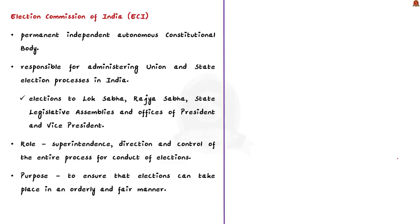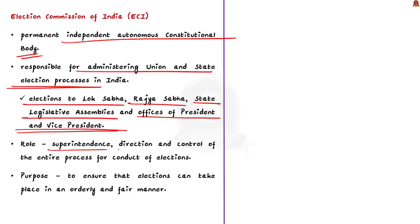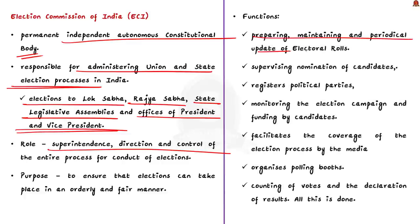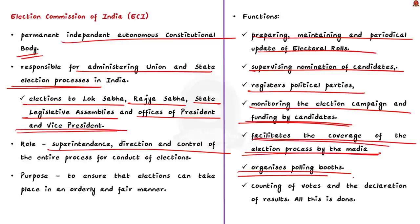Next comes the Election Commission of India. The ECI is a permanent constitutional body. It is an independent autonomous authority responsible for administering union and state election processes in India. It administers elections to the Lok Sabha, Rajya Sabha, state legislative assemblies, and elections to the office of President and Vice President. The superintendence, direction and control of the entire process for conduct of elections vests with the Election Commission of India. As part of this power, it prepares, maintains and periodically updates the electoral rolls. ECI supervises the nomination of candidates, registering of political parties, monitoring the election campaign including funding by candidates, and many more. It also facilitates media coverage of the election process and organizes polling booths where voting takes place.